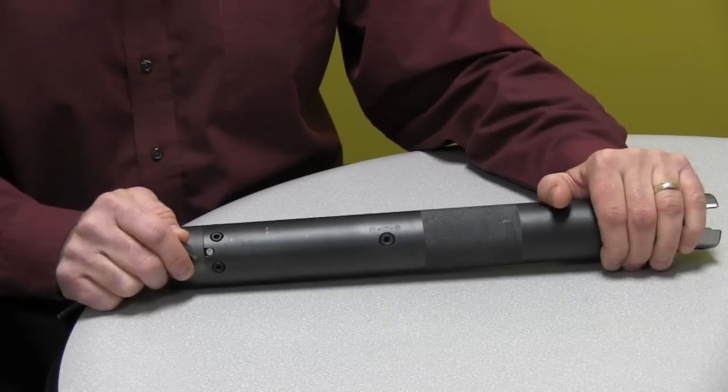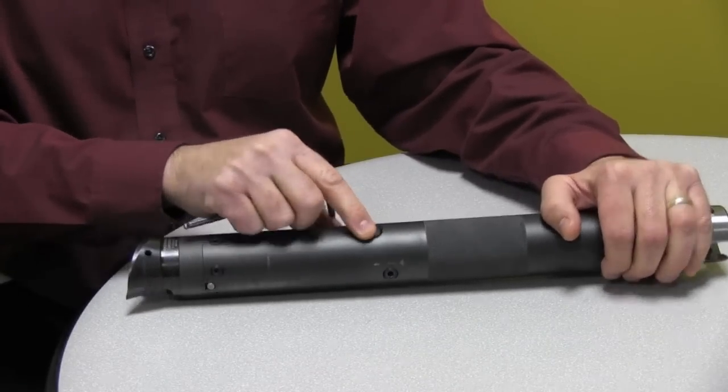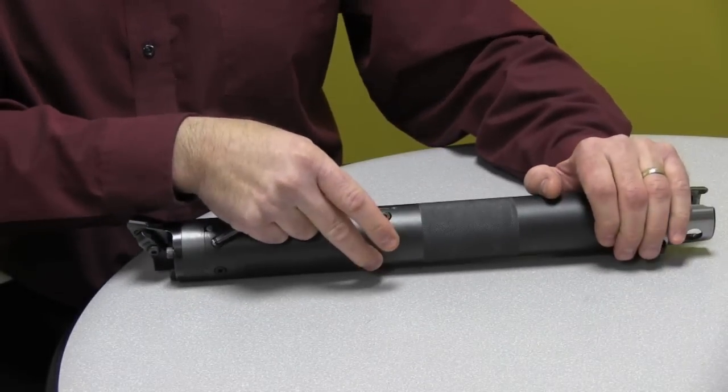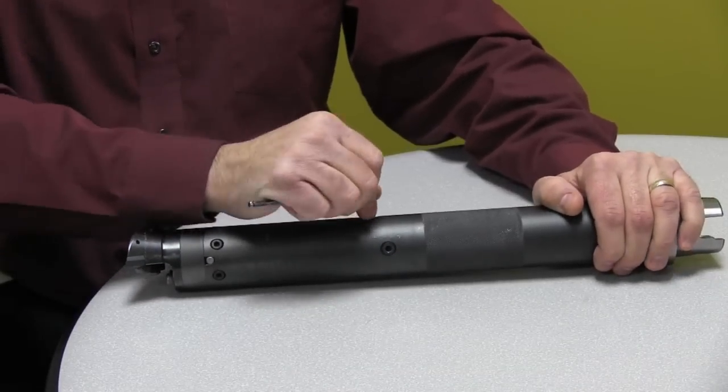The first thing we want to do, on the bar there's two lock screws, you see one here and one on this side. We want to loosen those lock screws.